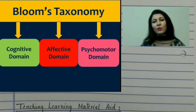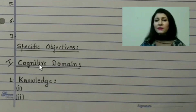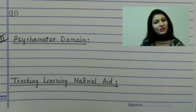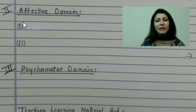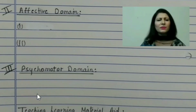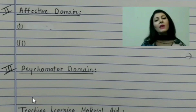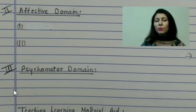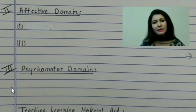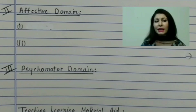You have to write specific objectives keeping all the three domains in mind, that is cognitive, affective and psychomotor. In cognitive domain write two objectives for knowledge level, two for comprehension and two for application level. Then in affective domain write two objectives, and in psychomotor only one objective would be enough. I have already discussed it in my previous video. If you want to know how to write specific objectives, then you can watch that video. The link to that video is given in the description below.